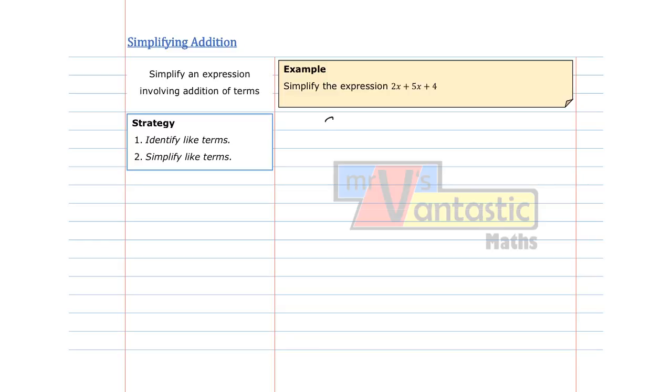Now the key thing to remember with this equation is that when we're simplifying, we can only simplify if they have the same terms. If they're like terms, we can add them up or subtract them, otherwise we can't.